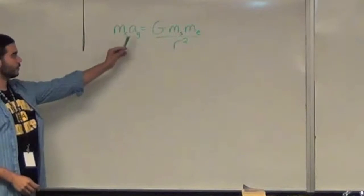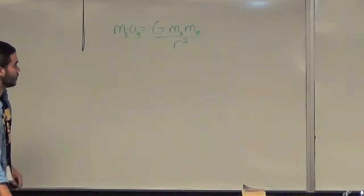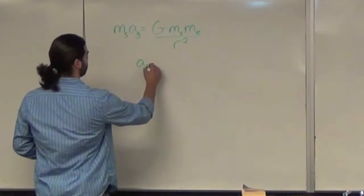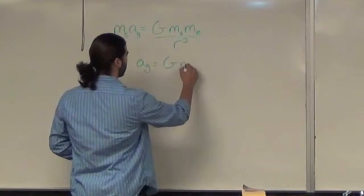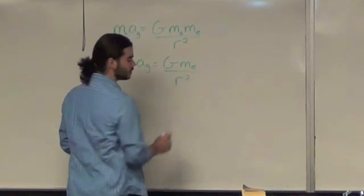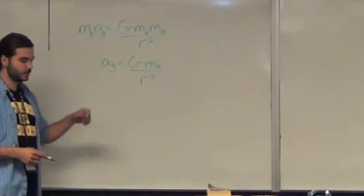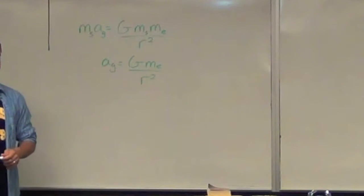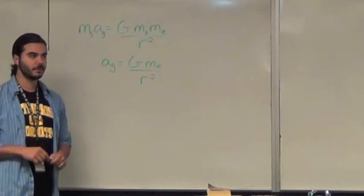Now to solve for the acceleration due to gravity, you just divide both sides by the mass of the space station. And you end up getting that the acceleration due to gravity is equal to the gravitational constant times the mass of the Earth divided by distance squared. We know that the acceleration due to gravity at the surface of the Earth is 9.8 meters per second squared. So, let's find out what it is at 250 miles above the Earth.